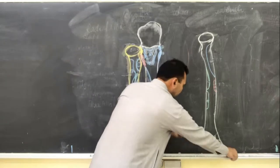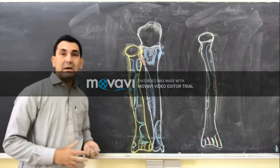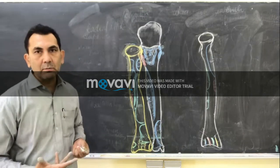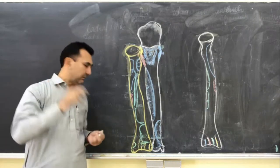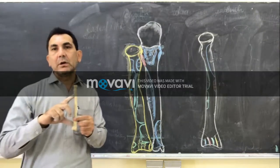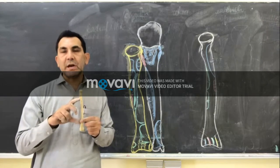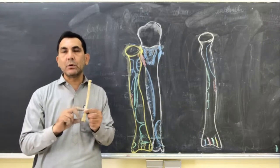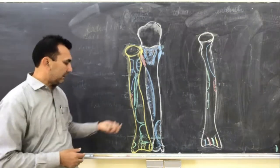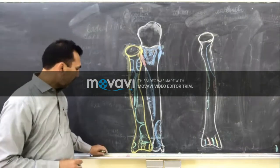Today we will learn about the radius bone, which is the lateral bone of the forearm. The radius is a type of long bone with three characteristic parts: the proximal end or upper extremity, the shaft which makes up the major two-thirds portion, and the lower extremity or distal end. We will use a diagram to learn more in detail about the radius bone.